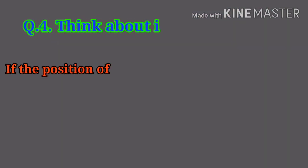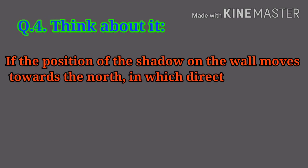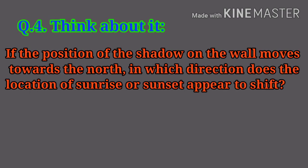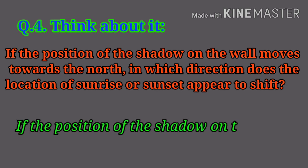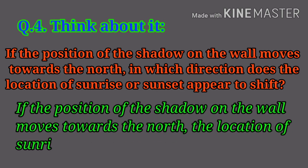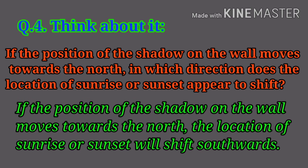Question number four: Think about it — if the position of the shadow on the wall moves towards the north, in which direction does the location of sunrise or sunset appear to shift? If the position of the shadow on the wall moves towards the north, the location of sunrise or sunset will shift southwards.